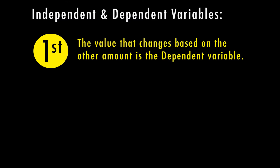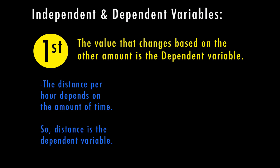We're talking about an equation where one thing depends on the other, and we consider this with information about the problem. For example, the distance per hour depends on the amount of time. The farther you go depends on how much time has passed, so distance is the dependent variable because distance depends on the amount of time.